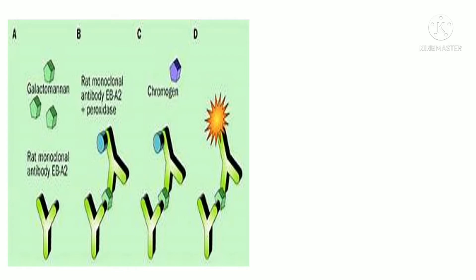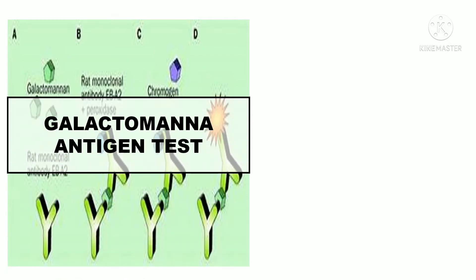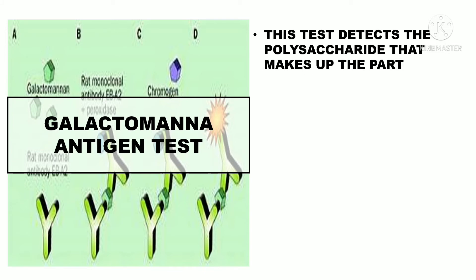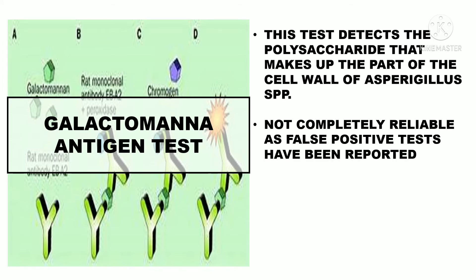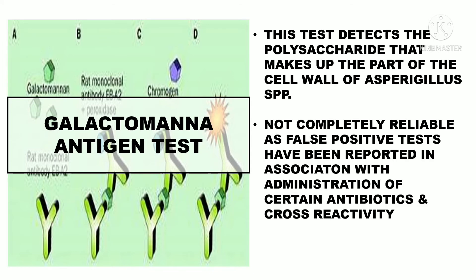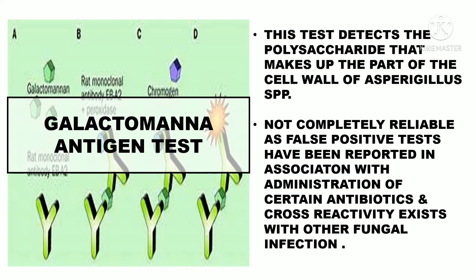The galactomannan test detects a polysaccharide present in the cell wall of Aspergillus species. It is not completely reliable, as false positive tests have been reported in association with administration of certain antibiotics, and cross-reactivity exists without actual fungal infection.